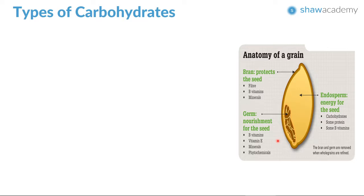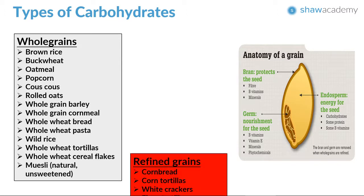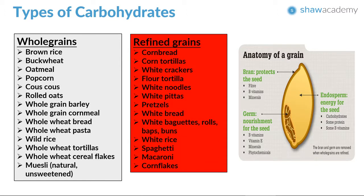Whole grains include an array of options, as you can see from the table — they are usually high in fiber and have a lower GI. Products typically say 'whole grain' or 'whole wheat.' Refined grains, by contrast, often have 'white' in the name — things like corn tortillas, white crackers, white noodles, white pita bread, and white rice.